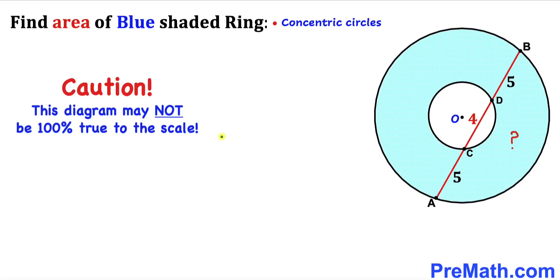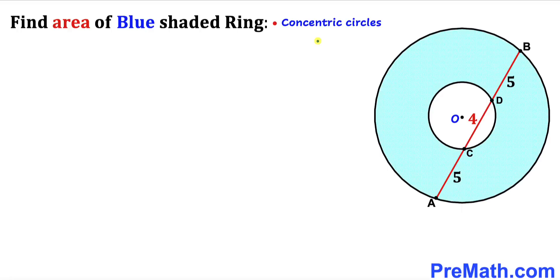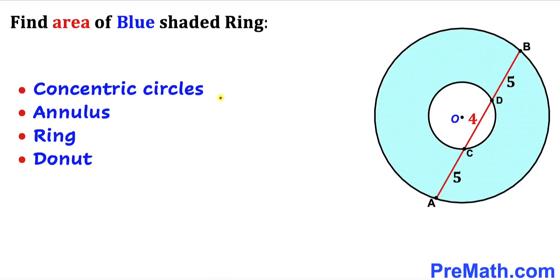Note that this figure may not be 100% true to scale. Before we proceed, let me go over these concentric circles. The blue shaded ring is also called an annulus, and since this shape resembles a donut, we may call it a donut as well.